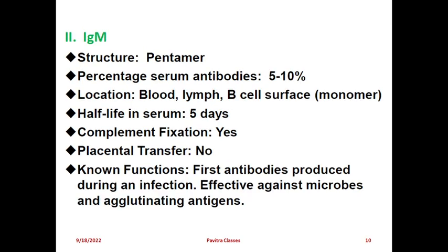IgM has a pentamere structure. Its percentage of serum antibody is 5 to 10%. Location is blood, lymph, and B cell surface. Half-life in serum is 5 days. Complement fixation is yes; placental transfer is no, so it does not act on fetuses or newborns. IgM is the first antibody produced during an infection. It is effective against microbes and agglutinates antigens, forming antigen-antibody complexes.